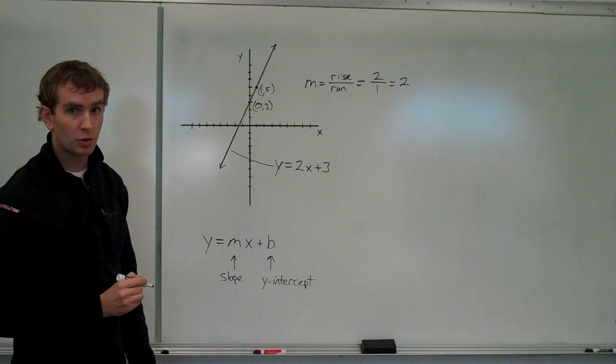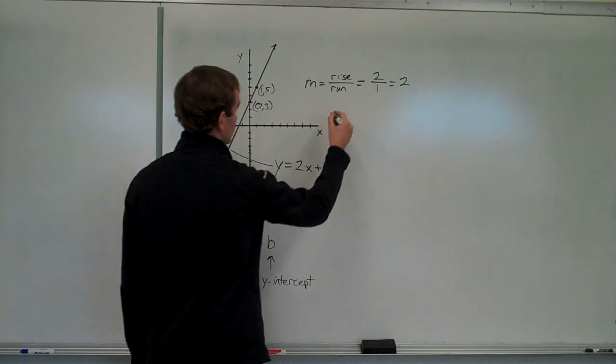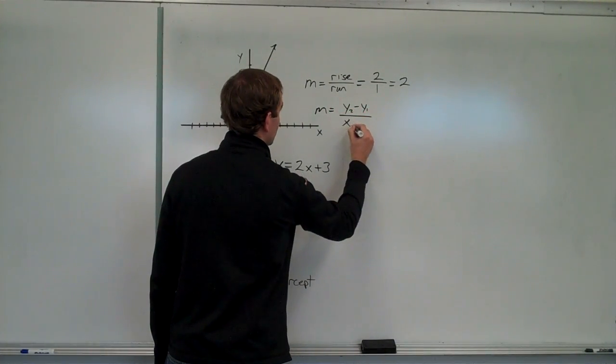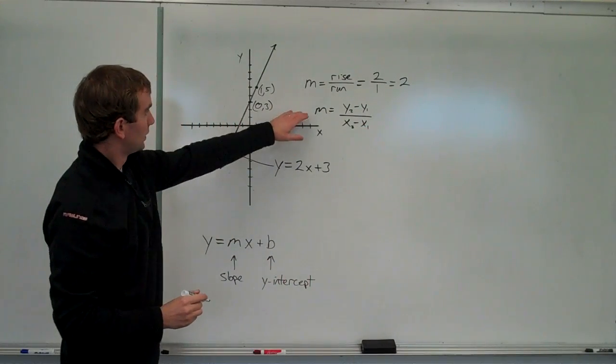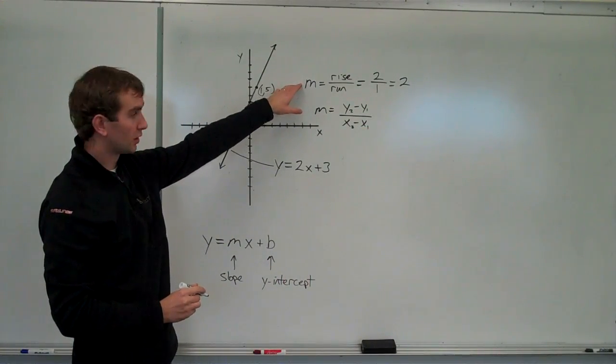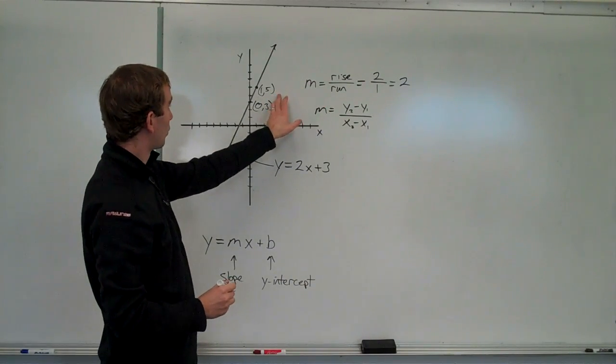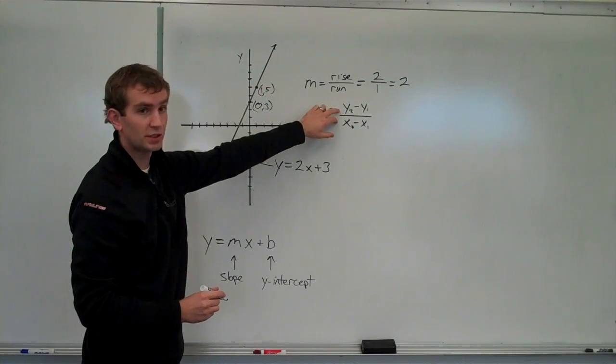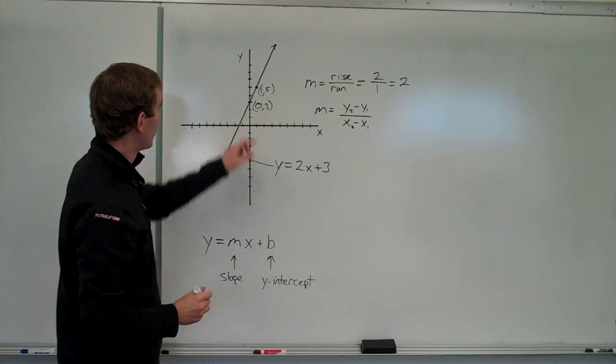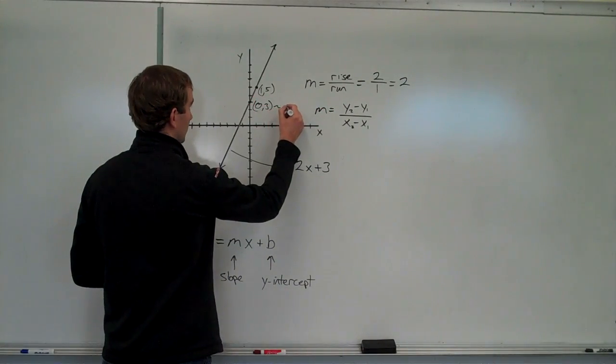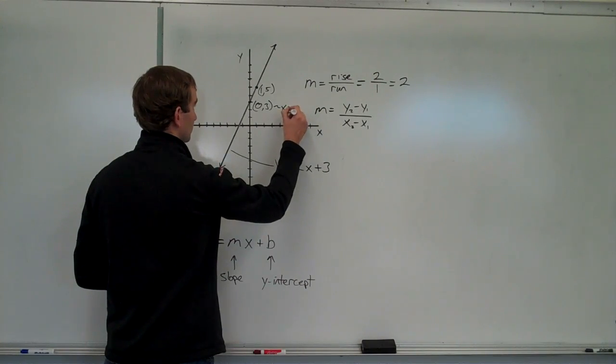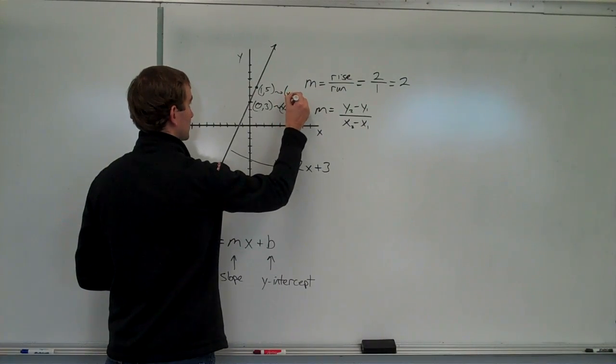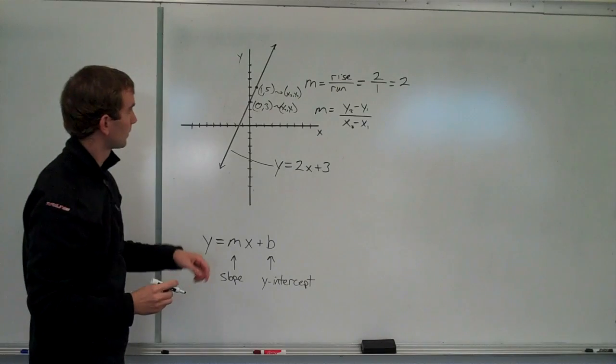There's another way that we can determine what slope is. And that's to use the equation y2 minus y1 over x2 minus x1. This is basically the exact same thing as what we did up here, except if we have two coordinates, instead of counting units, we can just plug in those coordinates to this equation. Where one point, we would say, is x1, y1, and the other is x2, y2.